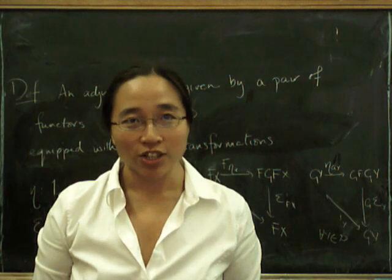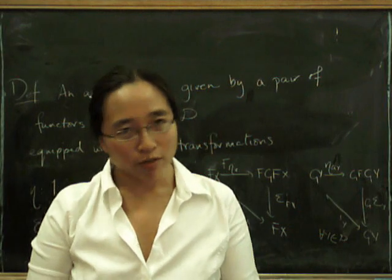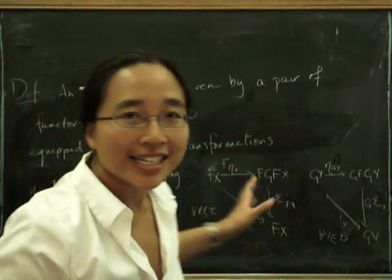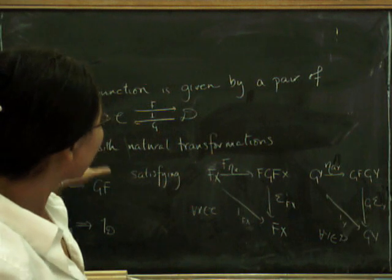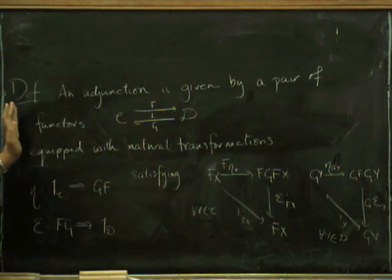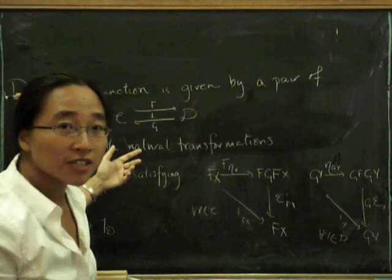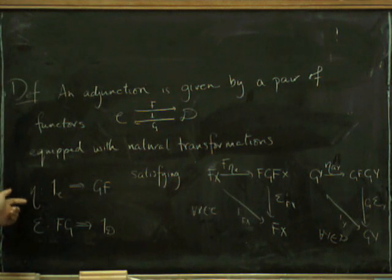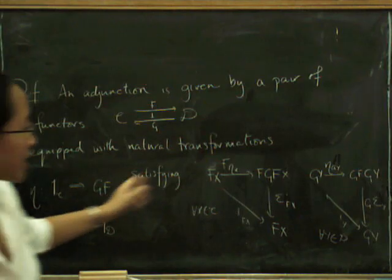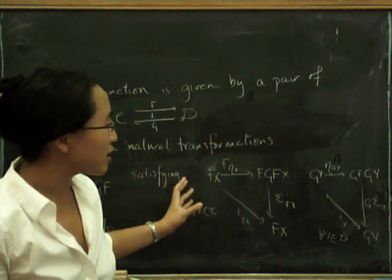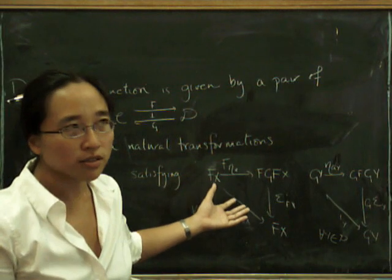Now we're going to carry on talking about adjunctions. Last time we defined an adjunction, and I'll be honest we didn't exactly define it like this with precise wording, but here is the definition of an adjunction. An adjunction is given by a pair of functors equipped with specified natural transformations eta and epsilon, the unit and co-unit satisfying these two axioms which are usually known as the triangle identities, because they're triangles.